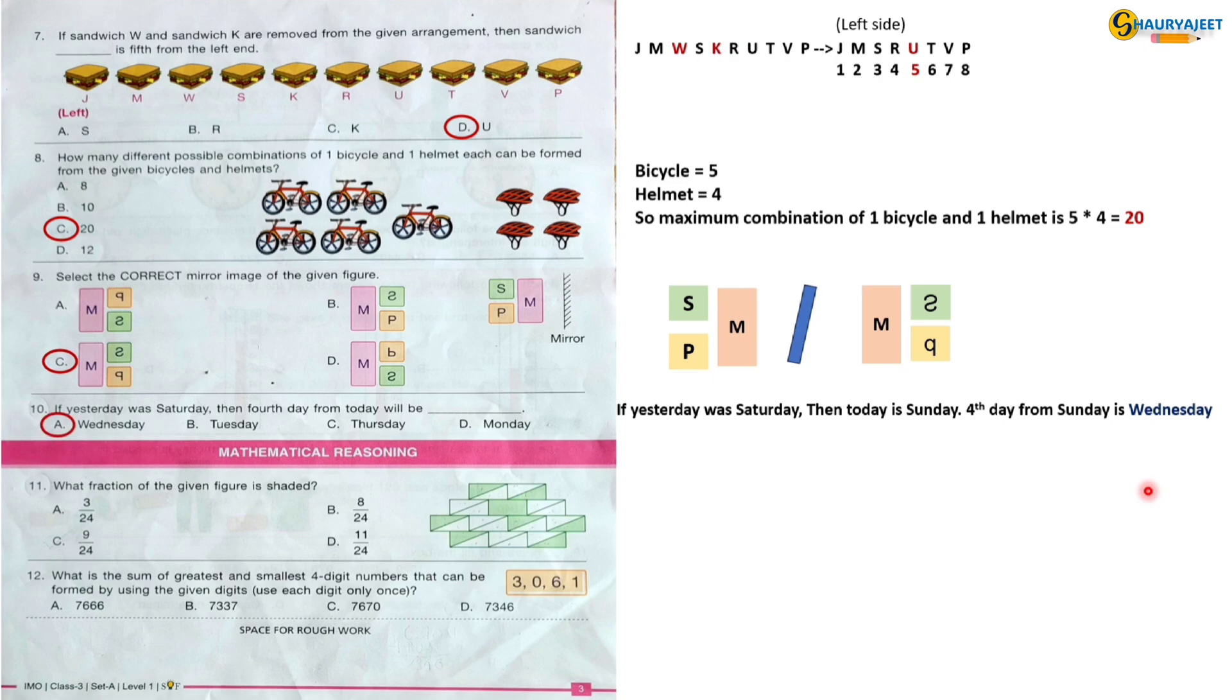Let's move to the next section, Mathematical Reasoning. Question 11: What fraction of the given figure is shaded? There are 12 blocks which make 24 portions. 9 portions have shaded. So fraction in figure will be 9 by 24. So the correct option is option C, 9 by 24.